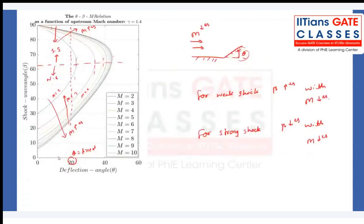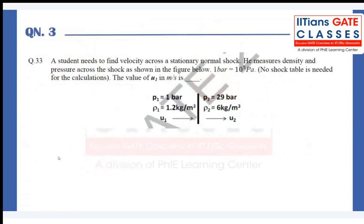Let us try the next question — a numerical. A student needs to find velocity across a stationary shock. He measures density and pressure across the shock: P2=29 bar, P1=1 bar (1 bar = 10⁵ Pa), rho1=1.2 kg/m³, rho2=6 kg/m³. No shock table is needed. The value of u1 in meters per second is to be found.